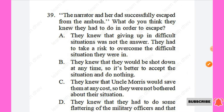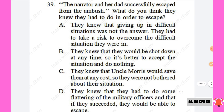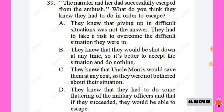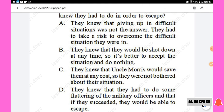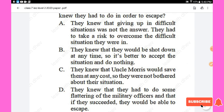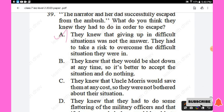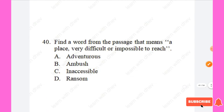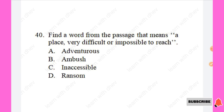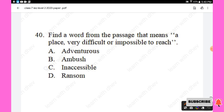Question 39: The narrator and her dad successfully escaped from the ambush. What do you think they knew they had to do? Options: A — giving up in difficult situations was not the answer; B — they had to take a risk to overcome the difficult situation; C — they knew they would be shot so accepted it; D — they had to flatter the military officers. The right answer is Option A. Question 40: Find a word from the passage meaning 'a place very difficult or impossible to reach.' Options: adventurous, ambush, inaccessible, ransom. The right answer is 'inaccessible,' Option C.